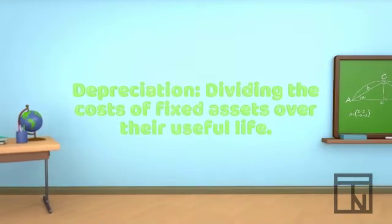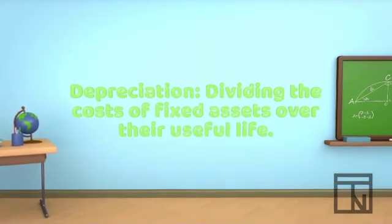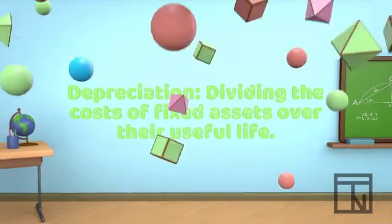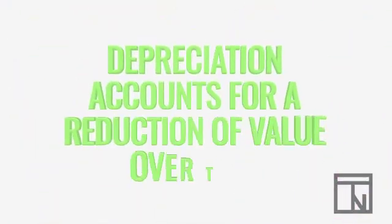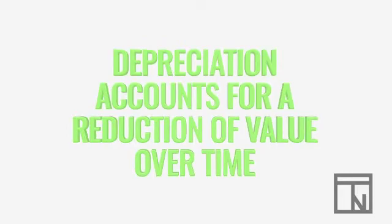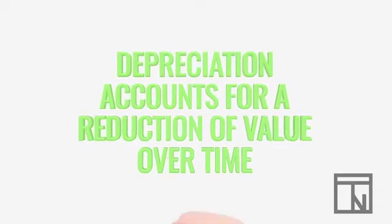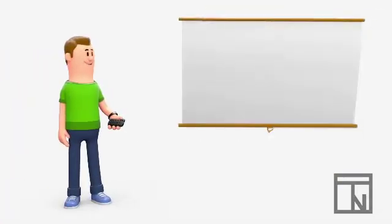When the cost of a fixed asset is divided up over its useful life, we call that depreciation. Depreciation not only complies with the Matching Principle under GAAP, but also reflects the reality that Bob's equipment will slowly lose value as it is used.